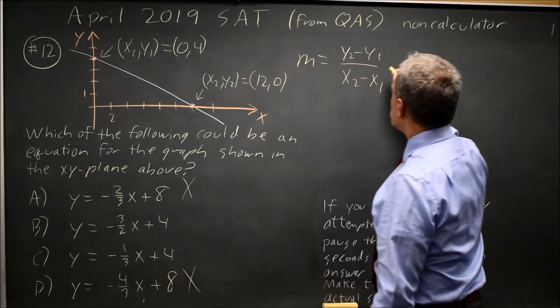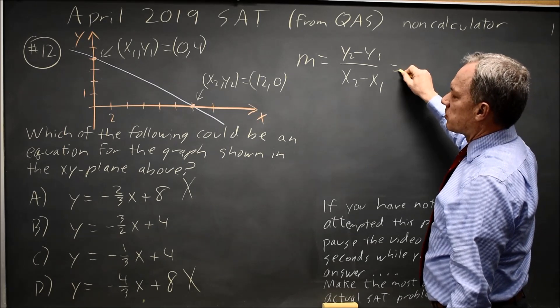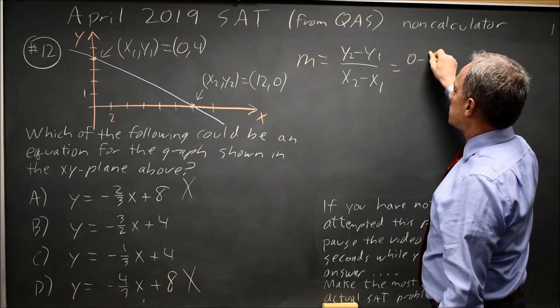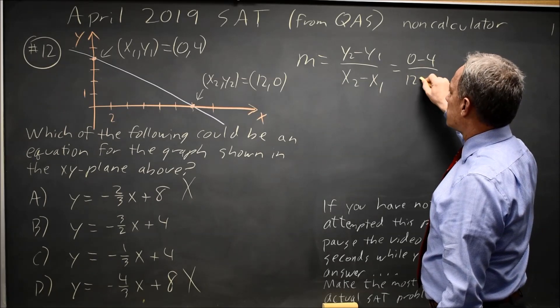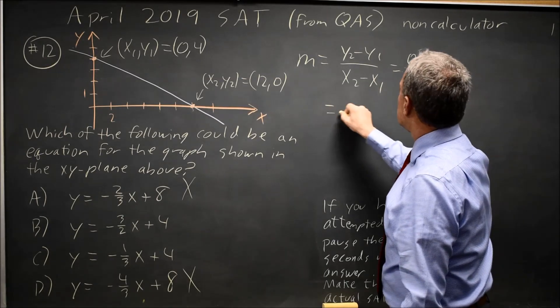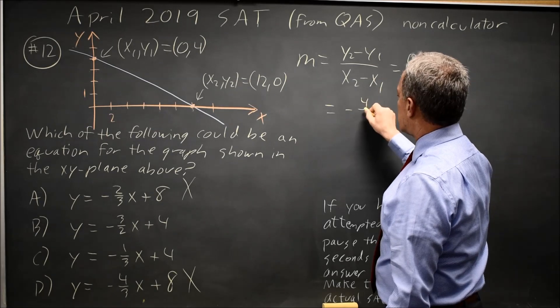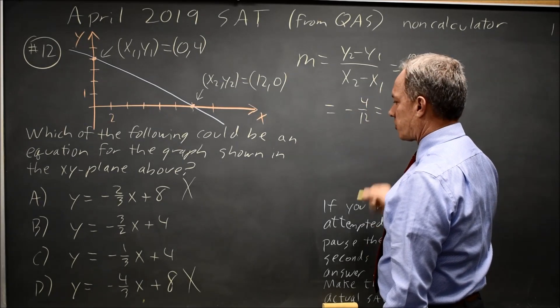So my slope is y2 minus y1 is zero minus four. X2 minus x1 is twelve minus zero. So my slope is negative four over twelve, which is negative one over three.